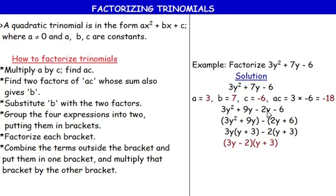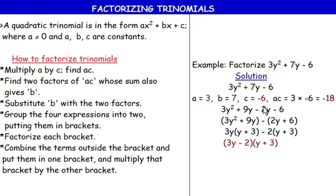We haven't changed anything — 9y − 2y is still 7y; we've just split it into two. Now we group the four terms into two pairs: (3y² + 9y) in one bracket, and −(2y + 6) in the second. When placing a bracket in front of a negative sign, the operations inside must change to their opposites.